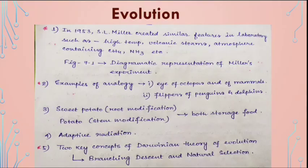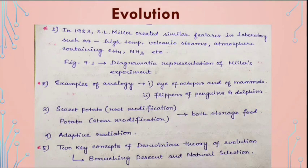In the Evolution chapter: in 1953, S.L. Miller created conditions similar to early Earth in the laboratory — high temperature, volcanic storms, and an atmosphere containing methane, ammonia, etc. Figure 7.8 — the diagrammatic representation of Miller's experiment — is important. Examples of analogy include the eye of octopus and mammals, flippers of penguins and dolphins. Sweet potato is a root modification and potato is a stem modification, but both store food. Next, study adaptive radiation, and note the two key concepts of Darwinian theory: branching descent and natural selection.